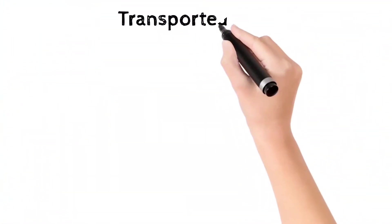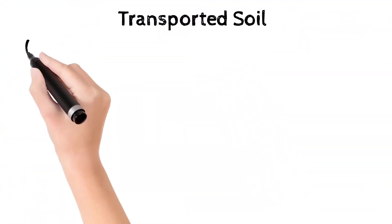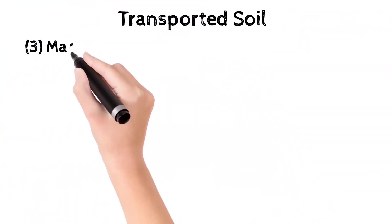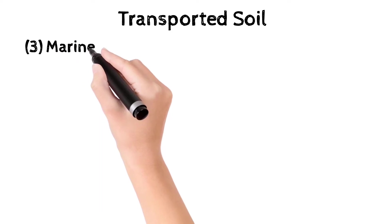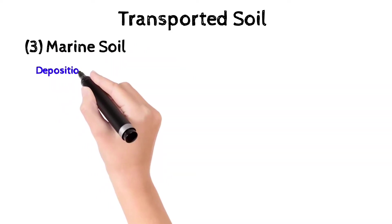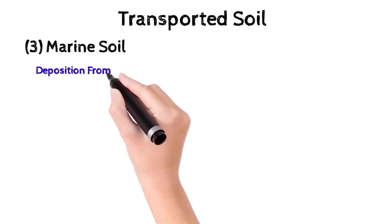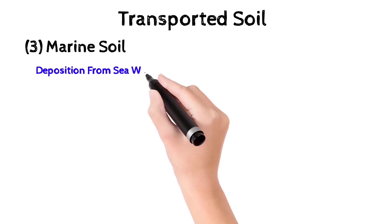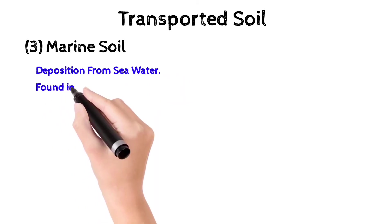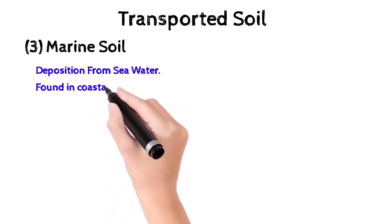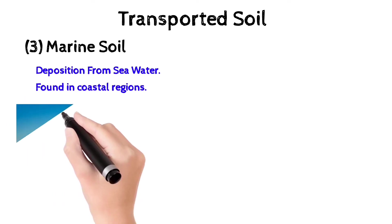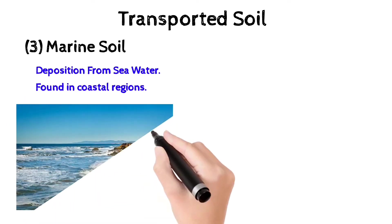The third classification of transported soil is marine soil. It is deposited from seawater and is found in coastal regions.